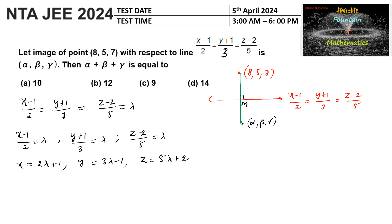Let us consider the general point on the line as point M, which we can write as (2lambda + 1, 3lambda − 1, 5lambda + 2).